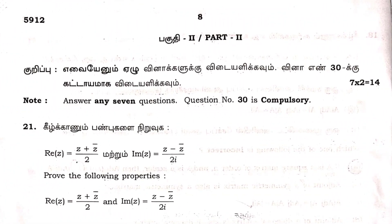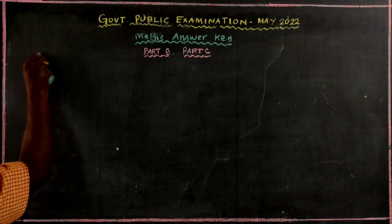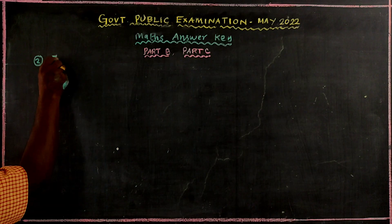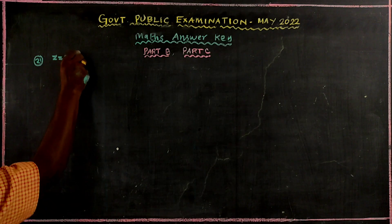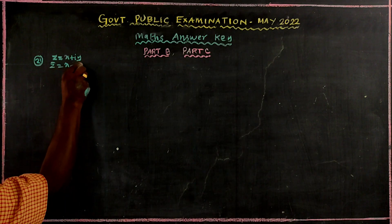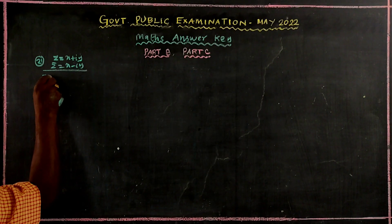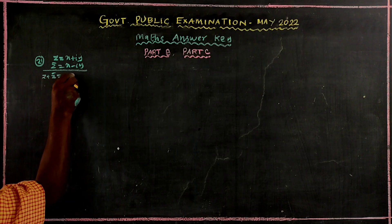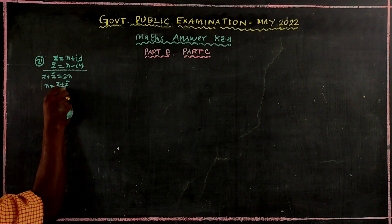In a general complex number, z is equal to x plus iy, z-bar is called the real part, and z-bar is equal to x minus iy. If we add the two parts, z plus z-bar is equal to 2x, so x is equal to z plus z-bar divided by 2.